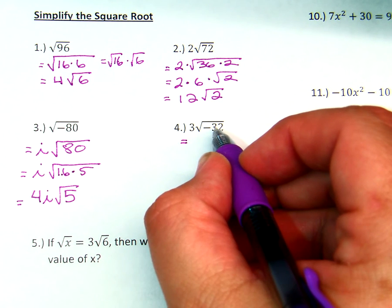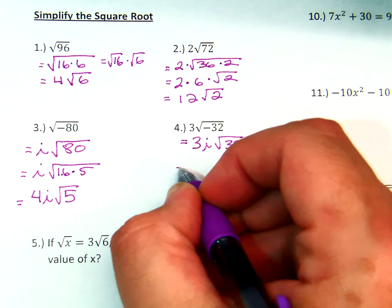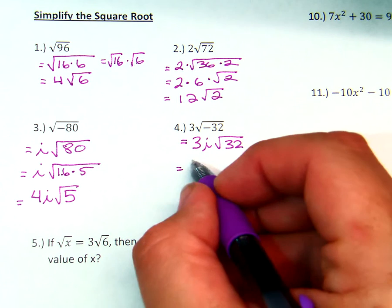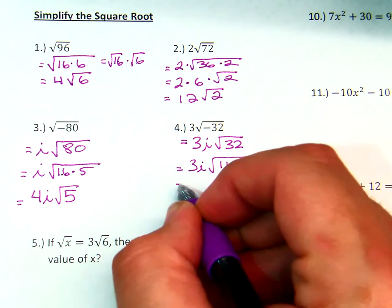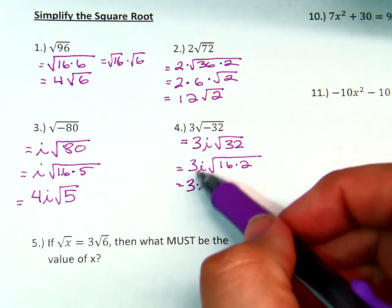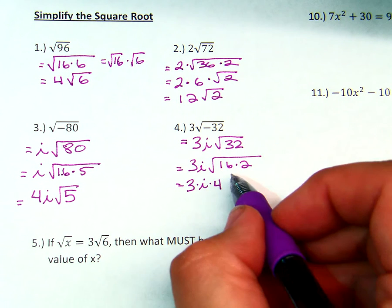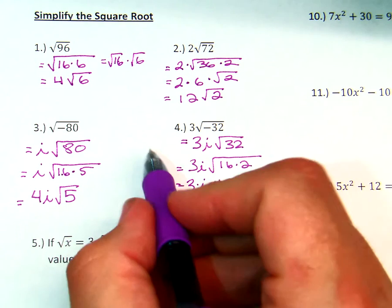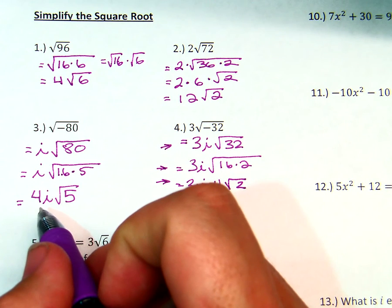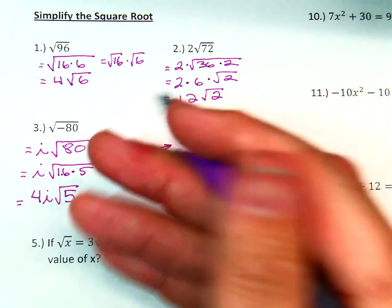Now we have a negative square root for 32, so I'm going to bring that out. I'll have 3i times the square root of 32. Now I have to make the square root into a perfect square times another number: 16 times 2. What's the square root of 16? 4. So you have 3 times i times 4. One of the biggest mistakes is that the 3 disappears, or when the i comes out it disappears — it all has to stay. Then we have the square root of 2. Notice: equal sign, equal sign. Every step of a new expression starts with an equal sign. If not, you're not doing it right, and I will be taking off points. That is mandatory.